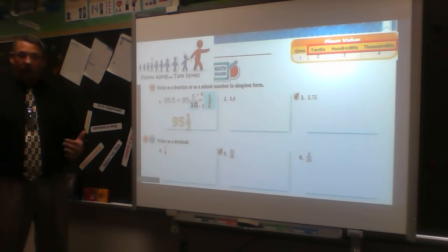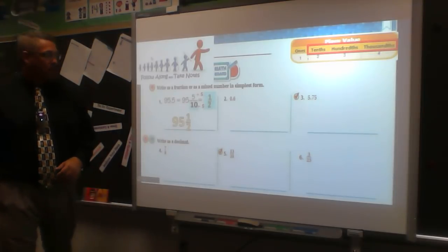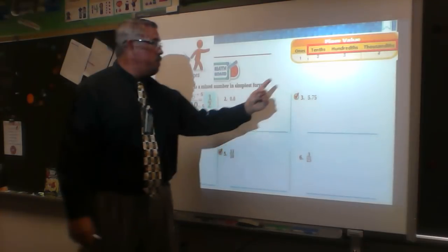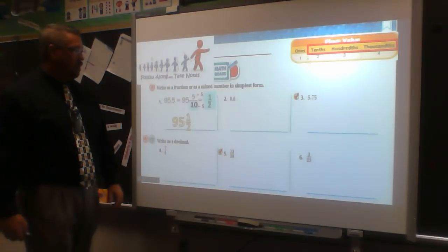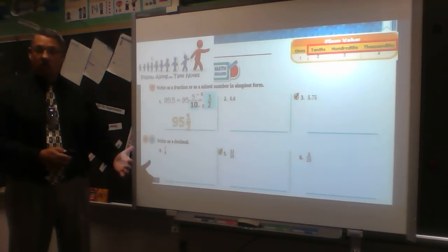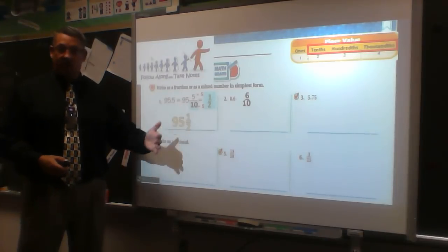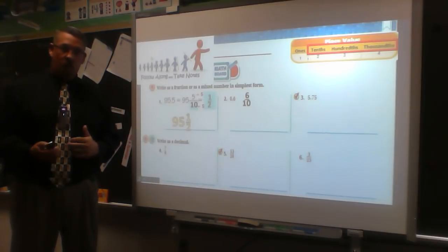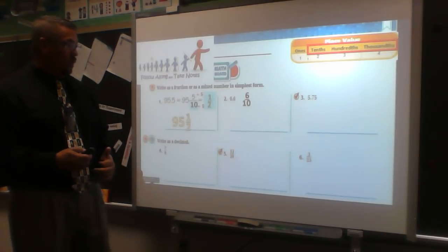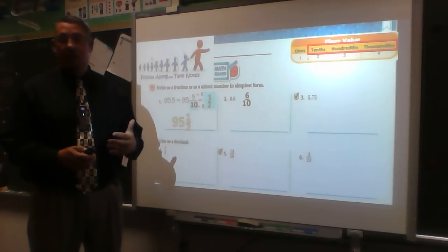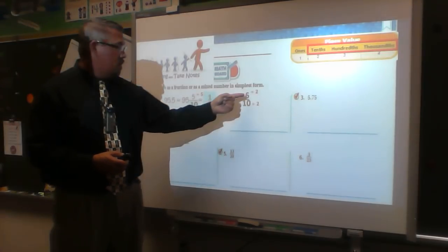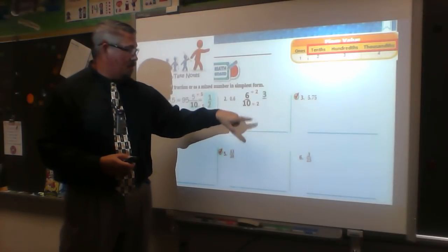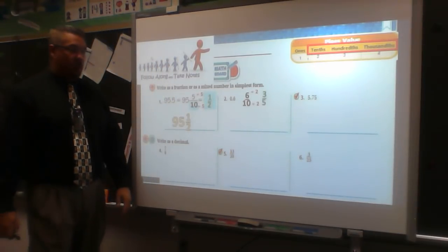For 0.6 — said as 'six tenths,' one decimal position, tenths — I write 6 over 10. Both are even so I reduce by 2: two goes into 6 three times and two goes into 10 five times, giving three fifths.